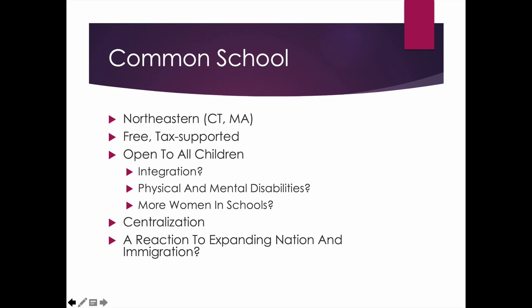The development of the common school. When we talk about the common school, we're basically talking about a northeastern institution — something that happened in places like Boston especially, and in New York and the middle states, not so much in the south. We're talking about a free, tax-supported idea that schools will be supported by taxpayers, one that is open to all children. But when we say all children, there are questions: Are we talking about integrating races? Some places, but certainly not all. Students with disabilities? In some places but not overwhelmingly. More women in school? In some limited amounts. So open to all children in theory, but in practicality, no.